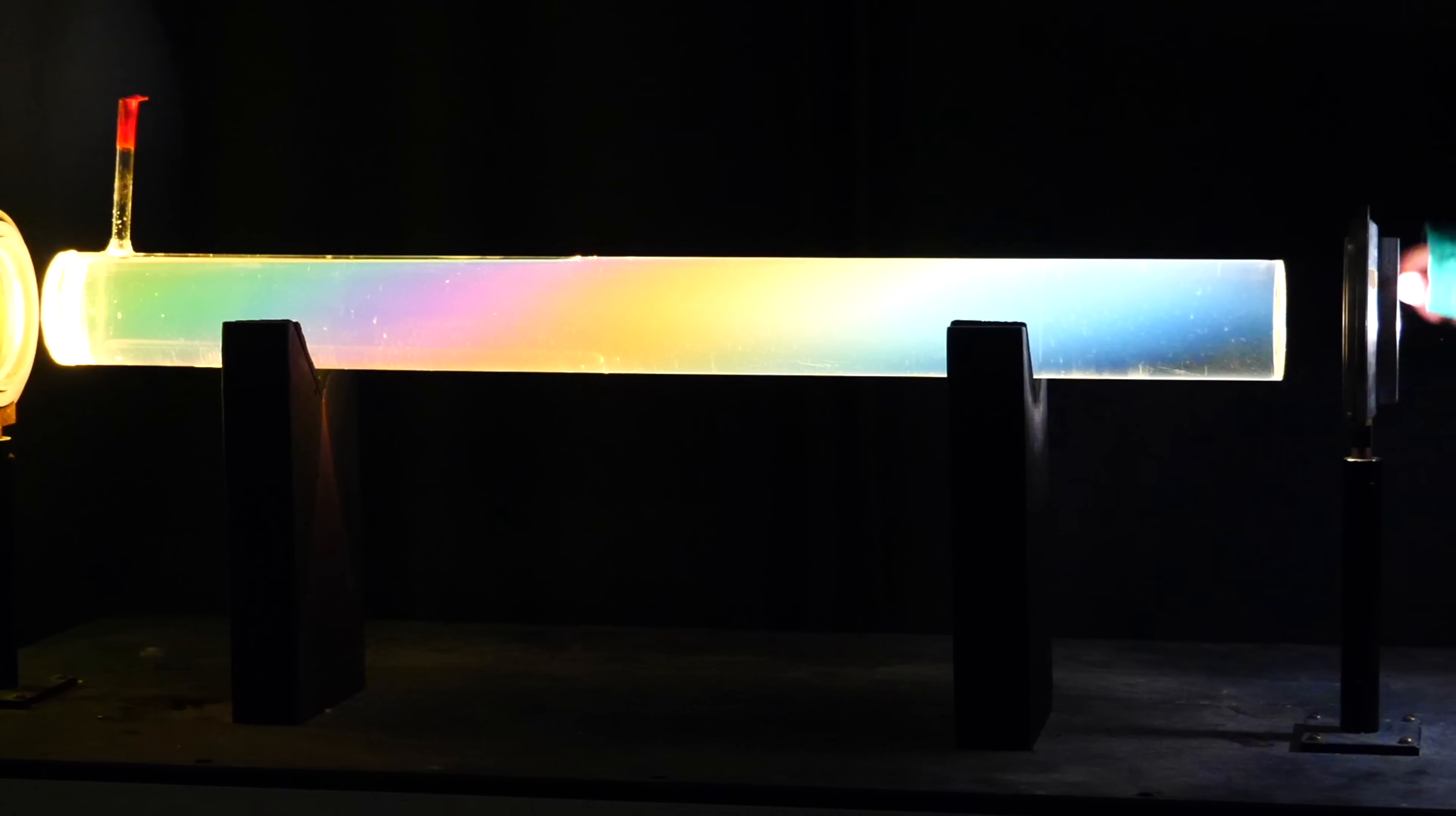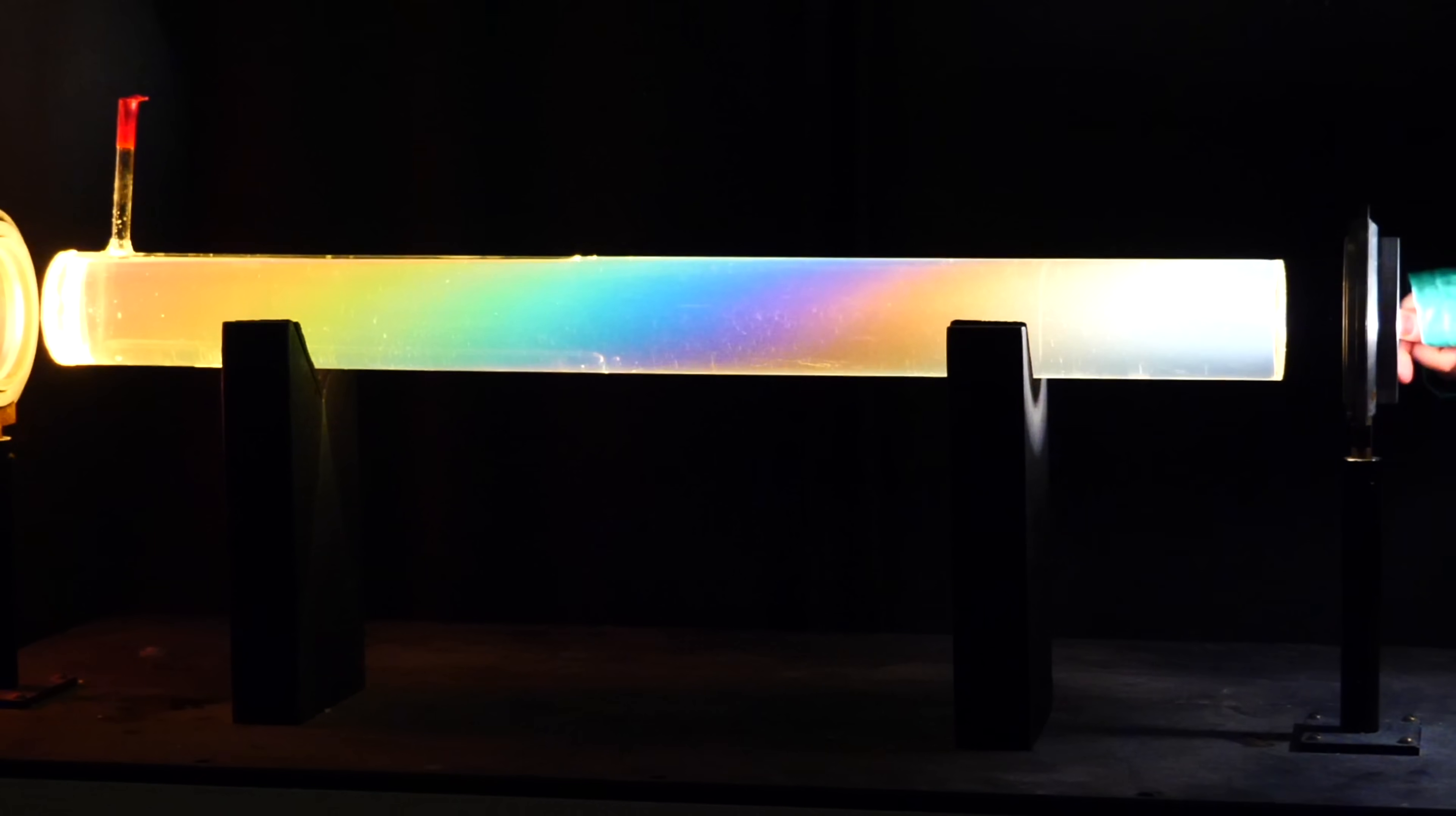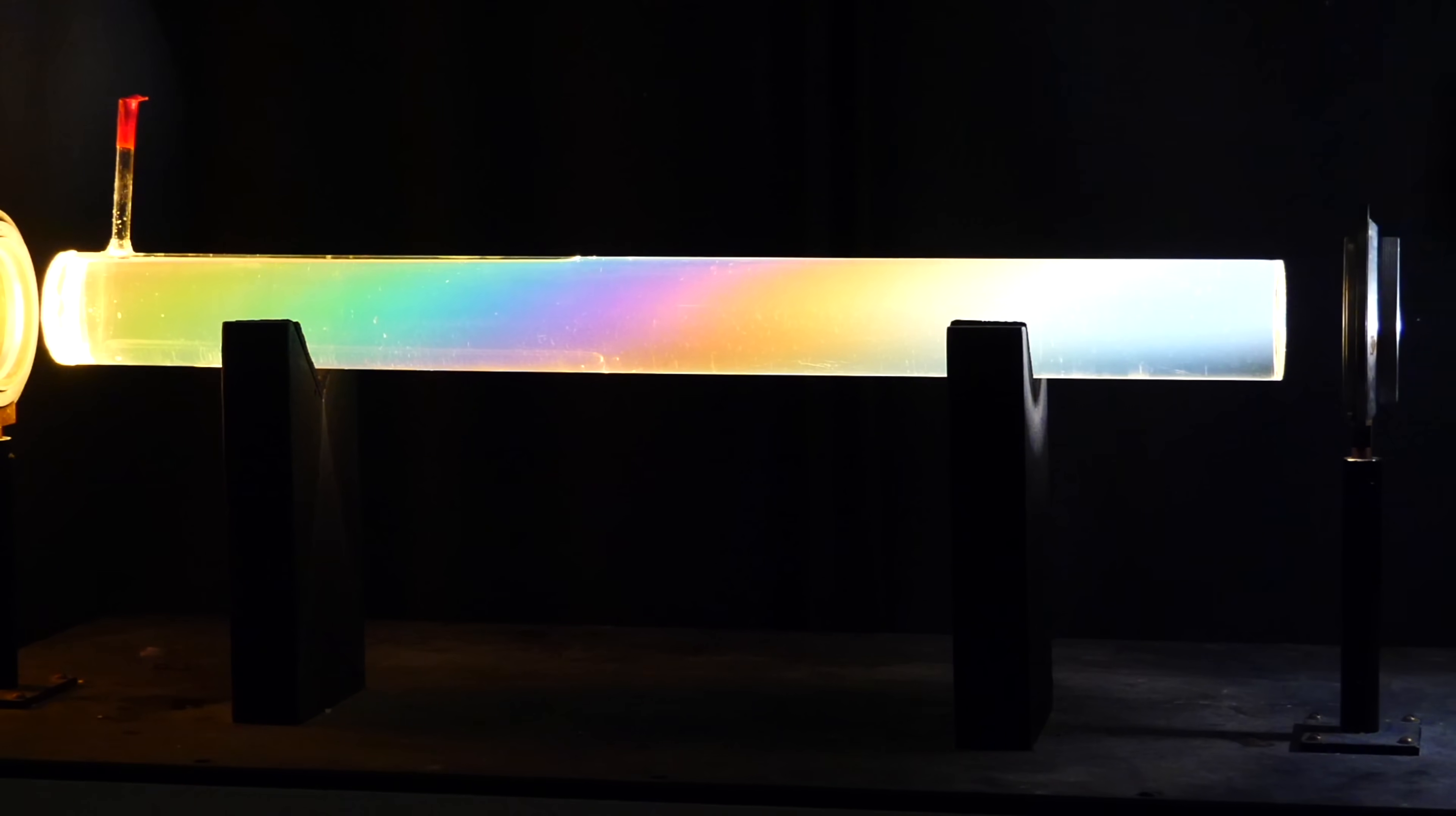And then if you turn the initial polarizer, you can kind of see those stripes, those diagonal stripes seem to walk up the tube. Oh wow! But why diagonal? Exactly, why diagonal, but why anything?